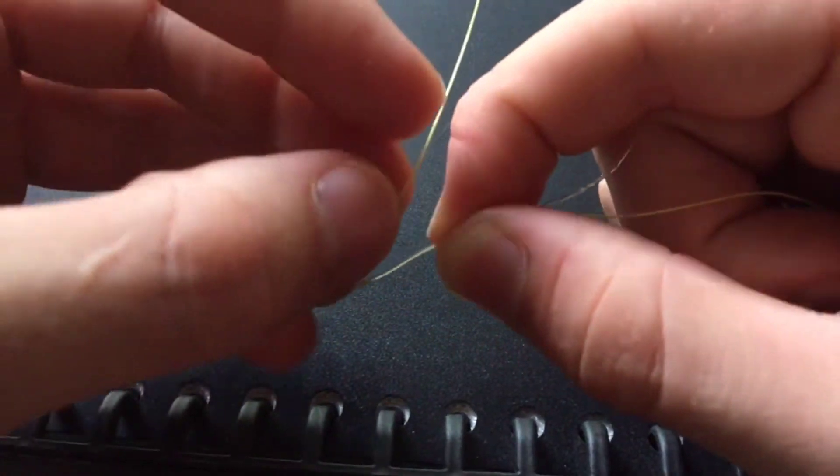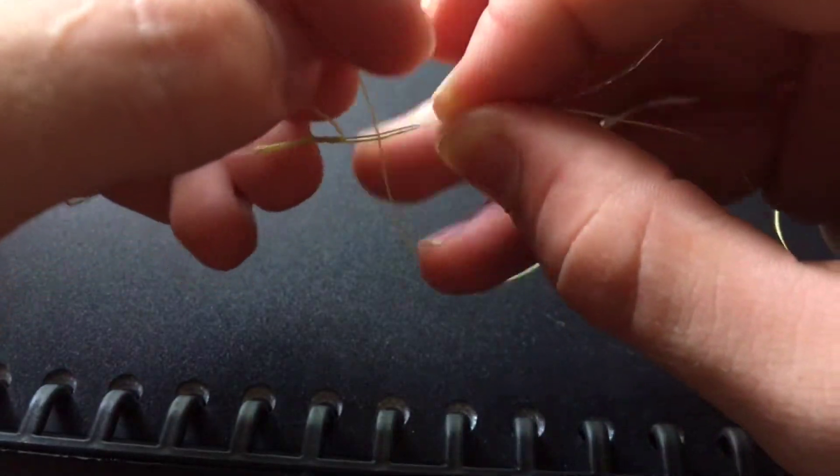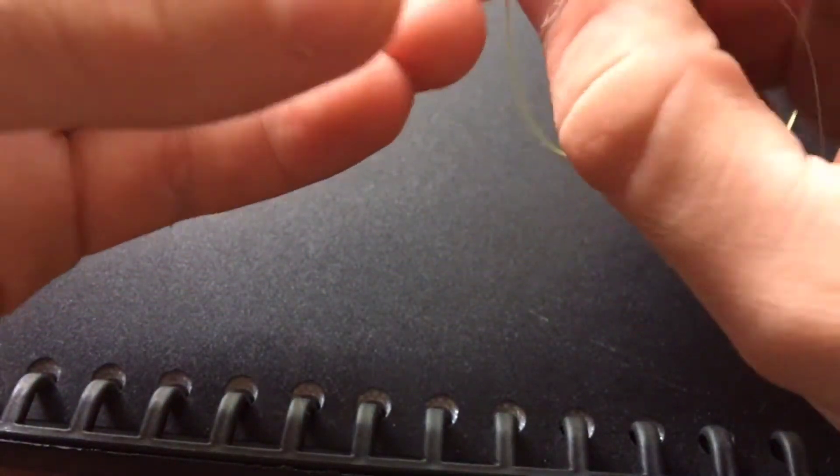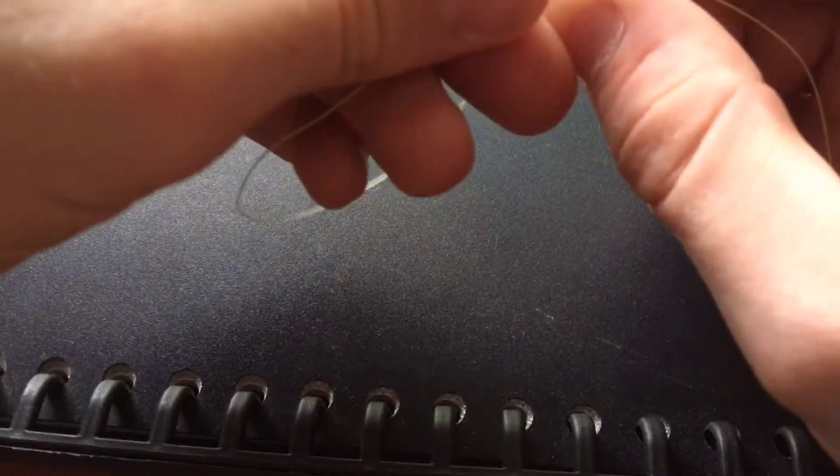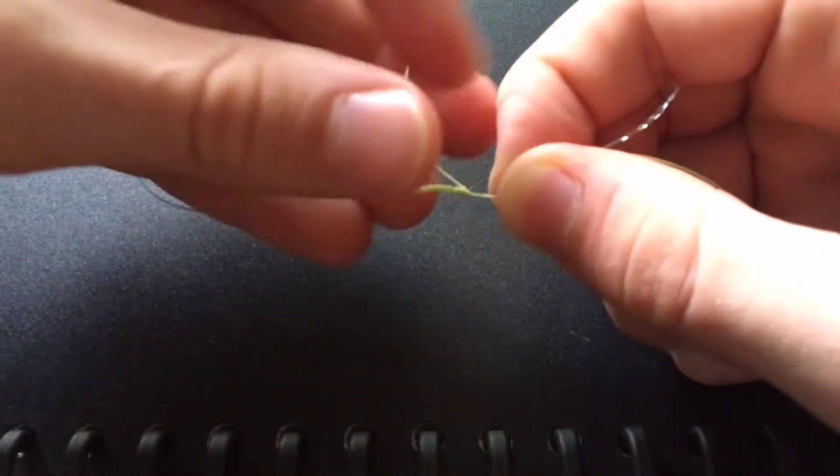If you don't know what a half hitch is, I'll show you. You make a little loop, and from the other side the tag end goes through. It creates like an overhand but on a line. That'll get it nice and snug and tight.